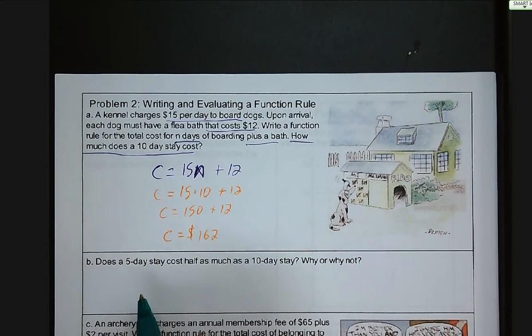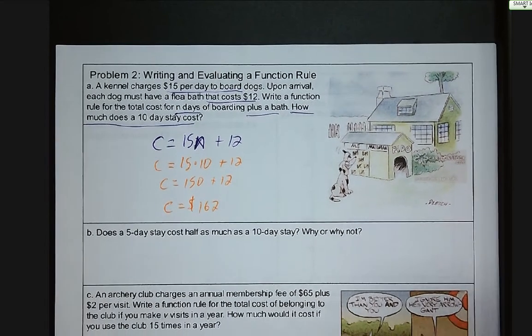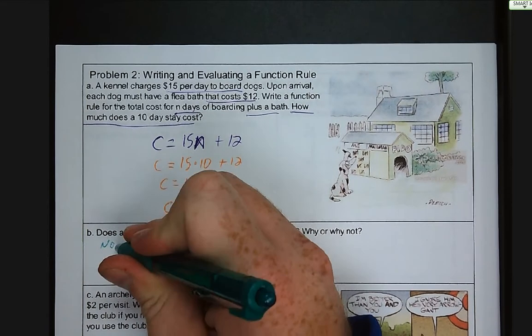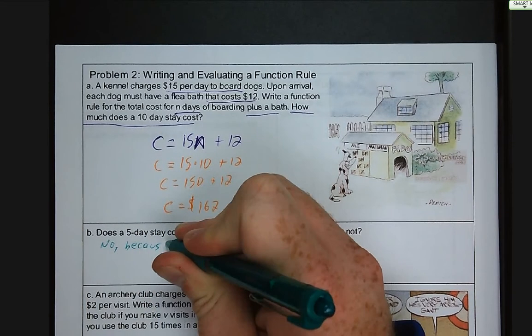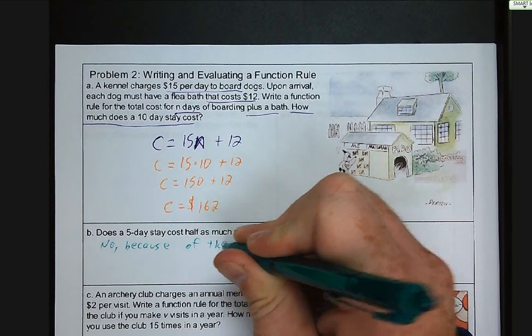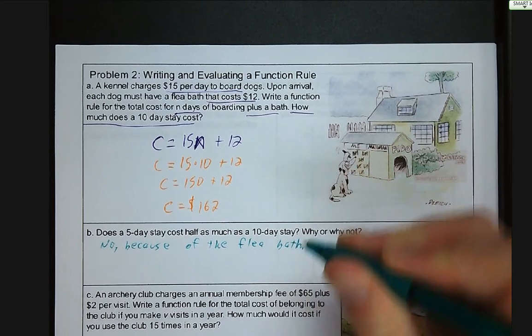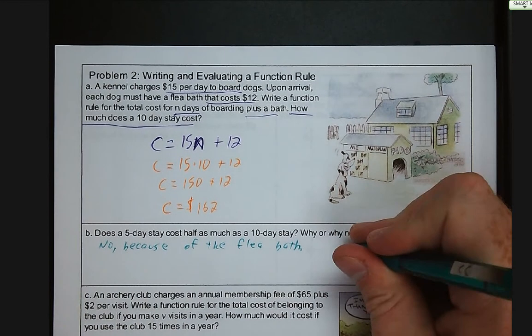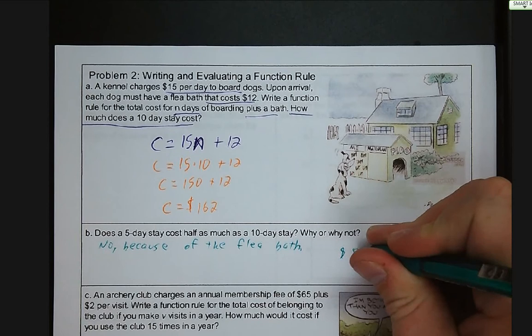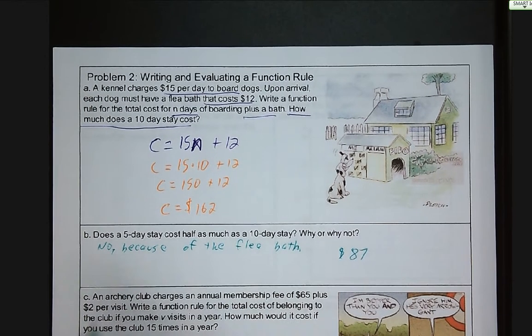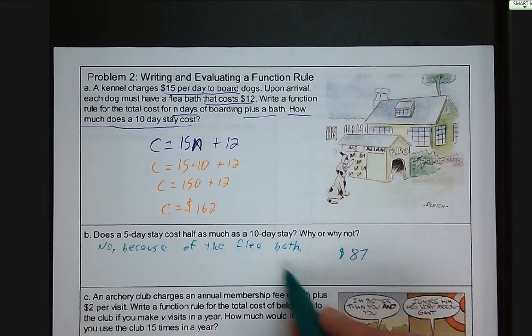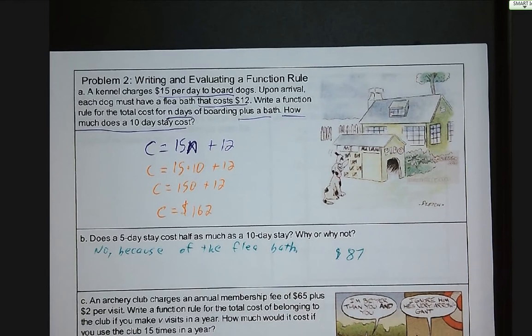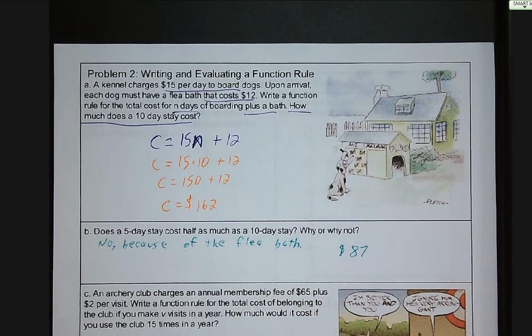So letter B asks us, does a five-day stay cost half as much as a 10-day stay? Why and why not? Well, the answer is clearly going to be no. Because of the flea bath, which was a fixed cost that you have to incur no matter what, whether it's one day, 10 days, 20 days, 100 days, you're going to pay that $12 fee for a flea bath on that first day. So we're not just dividing by two each time. If you were to plug in five for the number of days, you would find that the cost of a five-day boarding would be $87, which is not half of $162. Because of that flea bath, that starting cost, you're not just going to be cutting things in half because your stay is half as long.